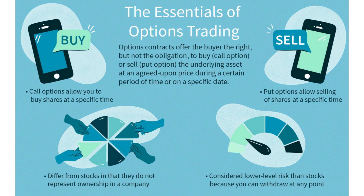There are two kinds of options: call options and put options. A call option gives you the right, but not the obligation, to buy an underlying asset at a specified price on or before a specific date. A put option is the opposite — it gives you the right, but not the obligation, to sell an underlying asset at a specified price on or before a specific date.